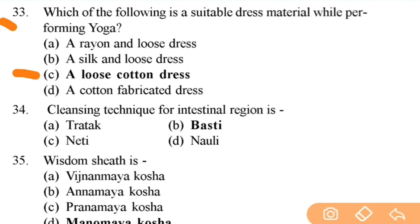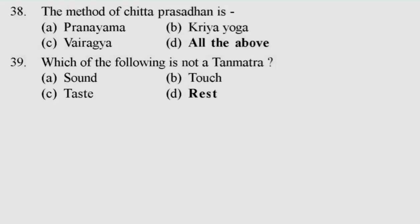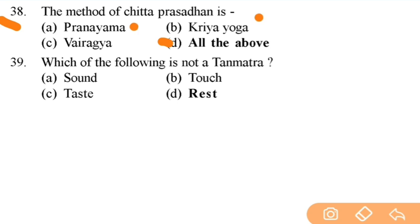Cleansing technique for intestinal purification is — right answer is B — Basti Kriya. Next: method of Chitta Prasthana is — right answer is D — all of the above: Pranayama, Kriya Yoga, and Vairagya. Next: which of the following is not a Tanmatra? Right answer is D.